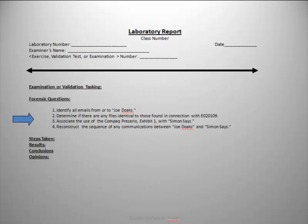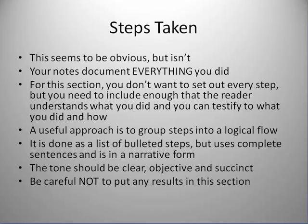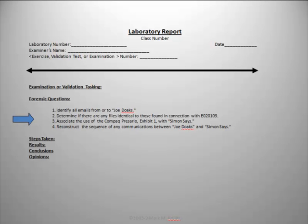As an example, we have four forensic questions here. The genre is to use sentences, bullet points, and very succinct but logical and objective prose. Forensic question one is to identify all emails to or from Joe Doakes. The second is to determine if there are any files identical to those found in connection with another piece of evidence — individualizing evidence. The third is to associate the use of this particular Compaq Presario with a particular person, Simon Says. And the last is to reconstruct the sequence of any communications between Joe Doakes and Simon Says.